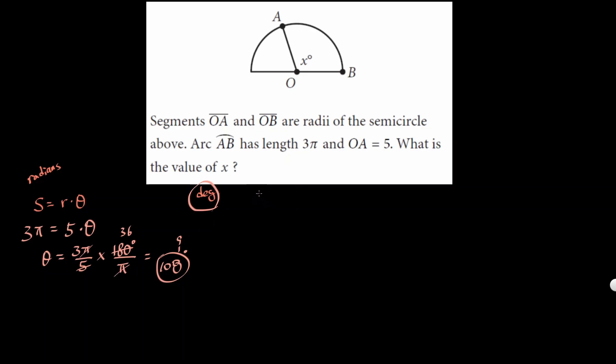We know the circumference of a circle is 2πr. That's the formula for circumference. Now, do we want the whole circumference? Nope, we just want 3π, which is this portion of the whole circumference, which is x over 360.